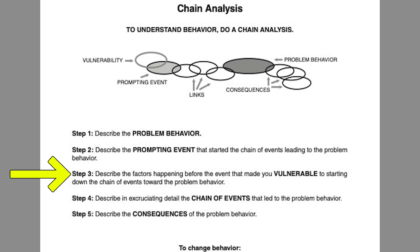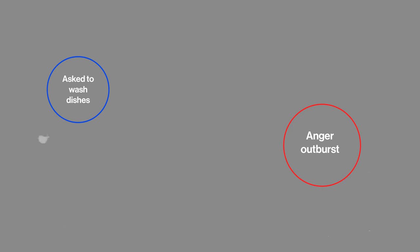Step three is to describe the factors happening before the event that made you vulnerable to starting down the chain of events toward the problem behavior — in other words, the vulnerability factors. These are not the direct cause of the problem behavior, but they certainly contribute to it. For example, maybe you didn't get a good night's sleep before this problematic behavior, so you were tired and more susceptible to lashing out. Maybe you hadn't eaten all day — again, more susceptible to lashing out. Or perhaps you had just looked at social media and saw all your friends going on vacation and felt quite jealous. These are all vulnerability factors that make you more susceptible to the problematic behavior.